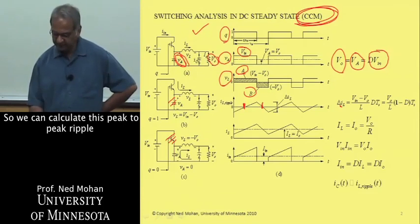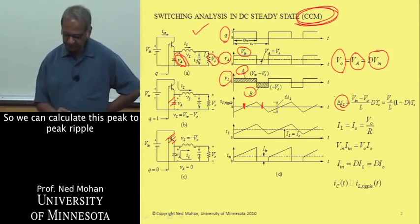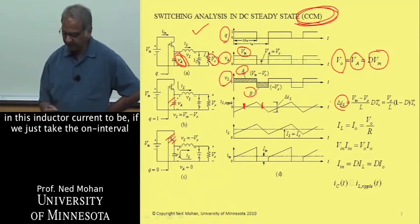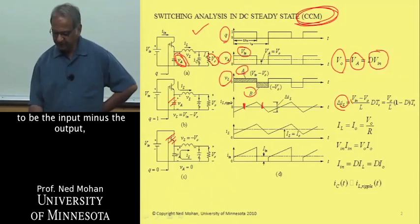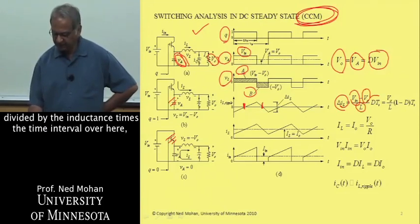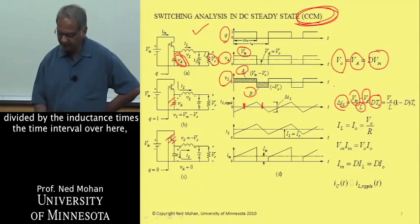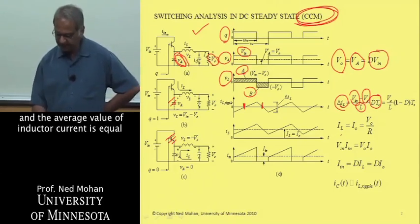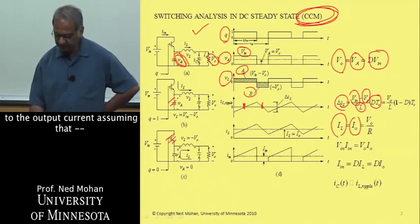So we can calculate this peak-to-peak ripple in this inductor current to be, if we just take the on interval, to be the input minus the output divided by the inductance times the time interval over here.